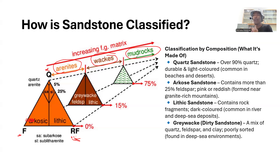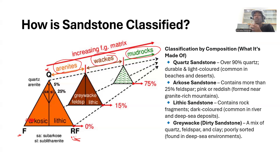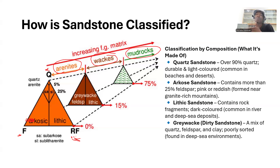A quartz wacke has predominantly quartz grains surrounded by mud or clay matrix. In a feldspathic wacke, feldspar is more abundant, and in a lithic wacke, lithic fragments are more abundant — all referring to systems with 15 to 75 percent clay matrix. The term graywacke was originally used to describe a lithic-rich sandstone with 10 to 50 percent micro clay or chlorite matrix.